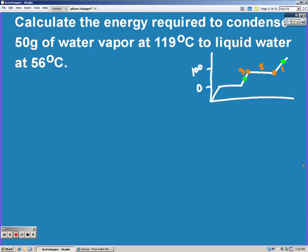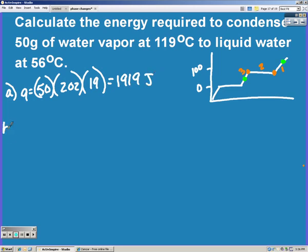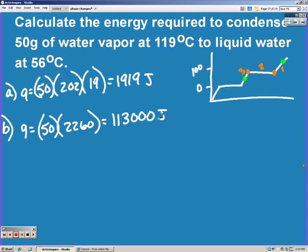So the first step, we're going to change the temperature, so we need to use Q equals MC delta T. Our mass was 50, and it's a gas, so 2.02, and our change in temperature is 19. Next, we're going to vaporize it or condense it. So same section of the graph, so we use Q equals MHv. And the last section is temperature change again, so Q equals MCAT. We're water, so we need to use 4.184.